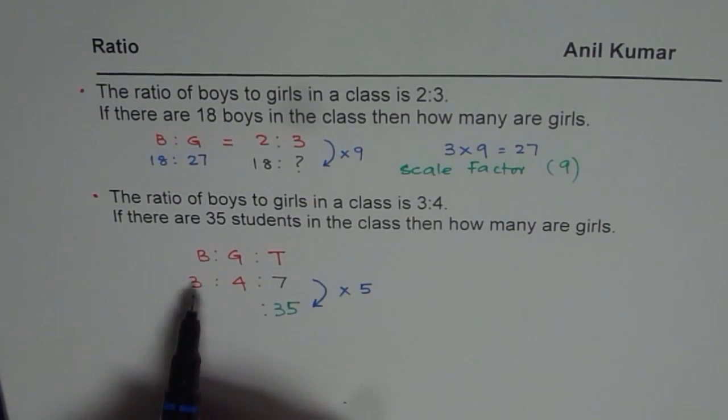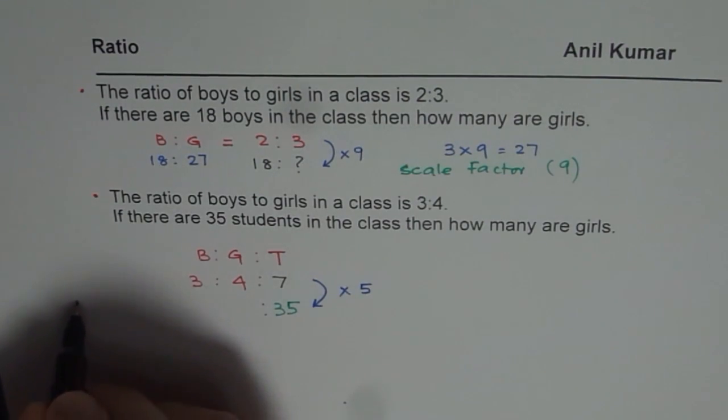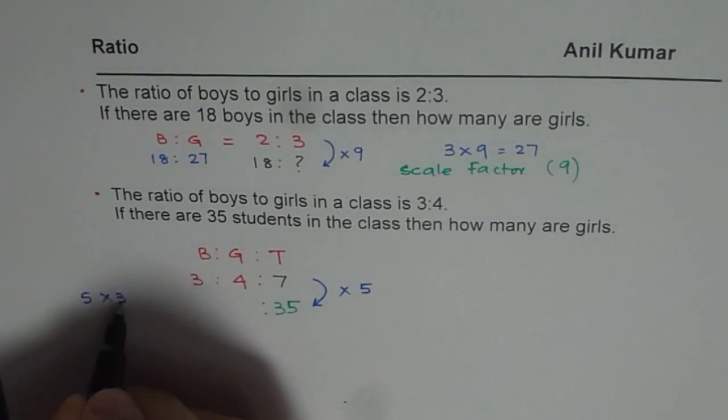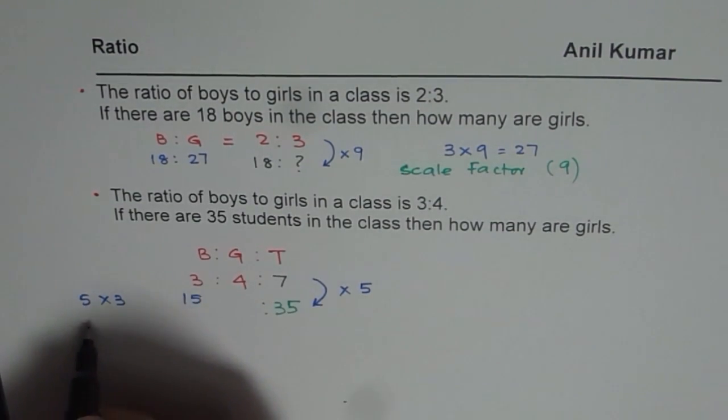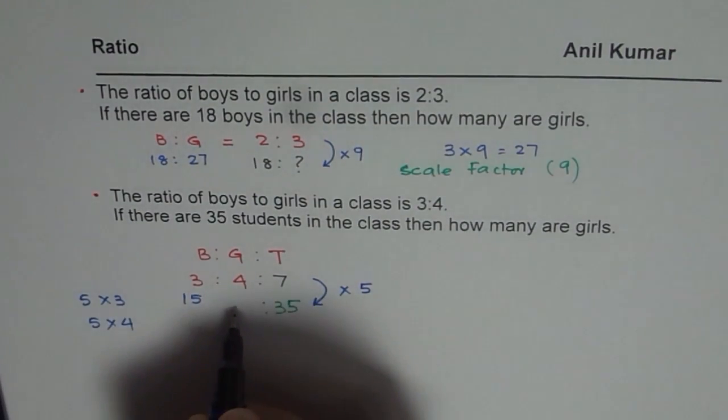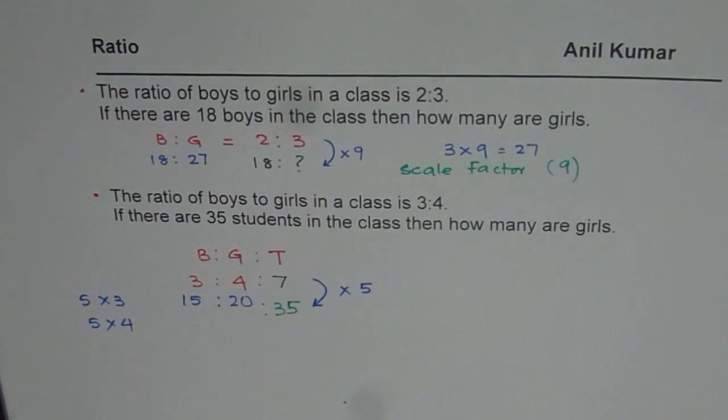And therefore multiply each term by 5. What is 5 times 3? You do 5 times 3 you get boys which is 15. And then you do 5 times 4 you get the number of girls which is 20. And when you add them you get 35.